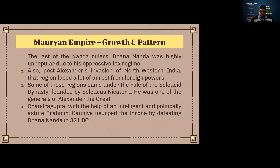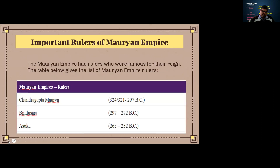After Alexander's invasion of northwest India, that event gave a lot of momentum to foreign powers. India had been repeatedly attacked from the northwestern part. There was significant unrest as many invaders and foreign powers came to rule parts of the region, some of which came under the Seleucid dynasty founded by Seleucus Nicator, who was one of Alexander the Great's generals. With the help of his intelligent and politically astute mentor Kautilya, Chandragupta seized the throne by defeating Dhanananda around 321 BC.